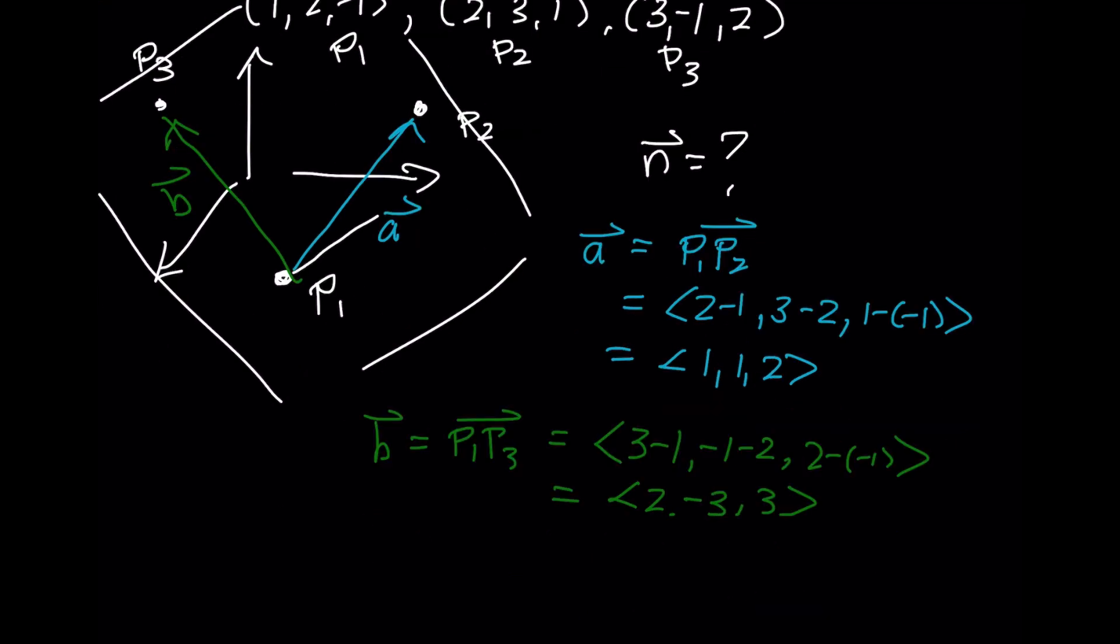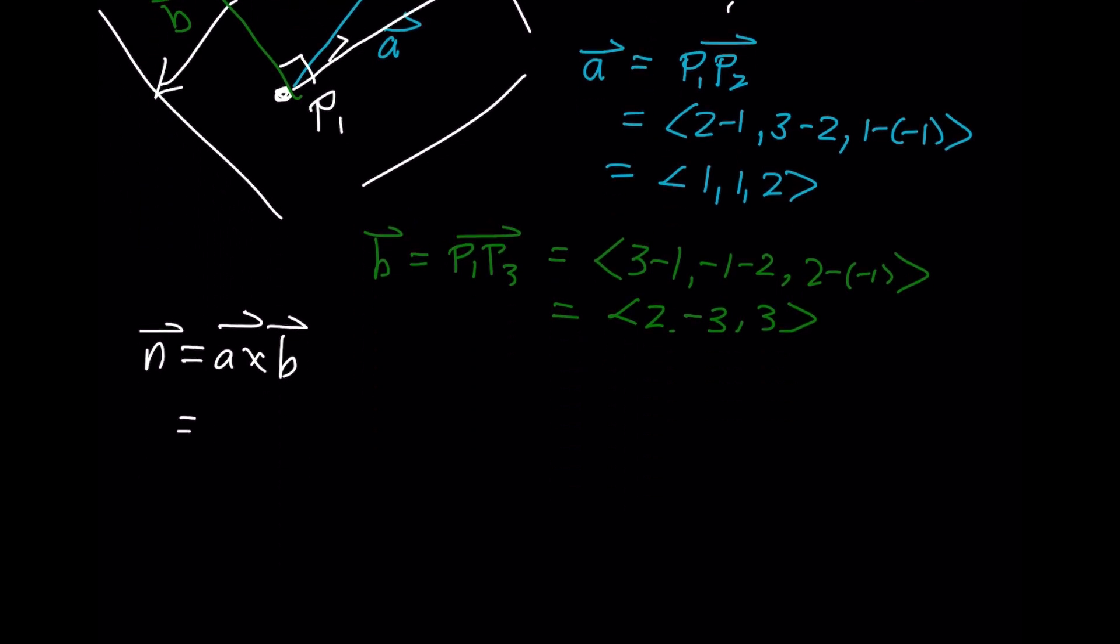So N is going to be a vector that is perpendicular to both of those. So N is going to be A cross B. Remember, the order determined whether this vector points up or down. If I compute the cross product like I normally do, what you will find is that you'll get 9i + j - 5k.